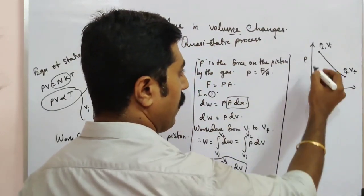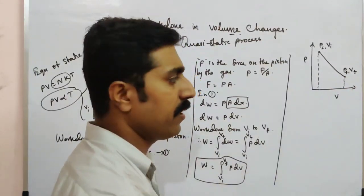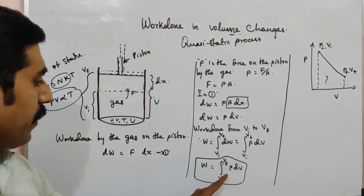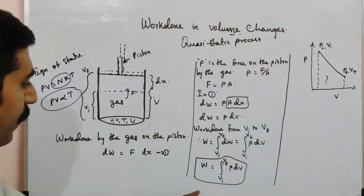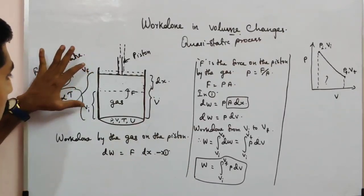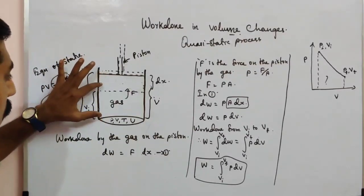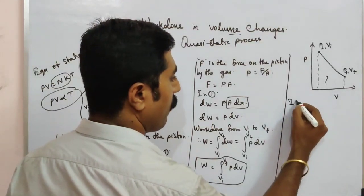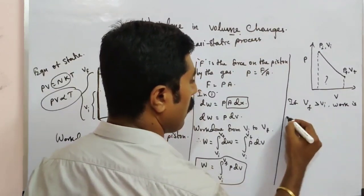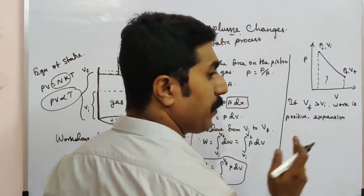So this is the final state — this shows the change in pressure and volume. Work done can be positive or negative. The initial volume is Vi and the final volume is Vf. If Vf is greater than Vi, the work is positive — that is expansion.